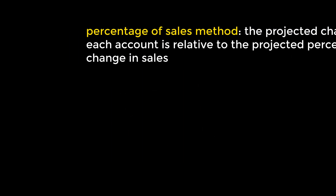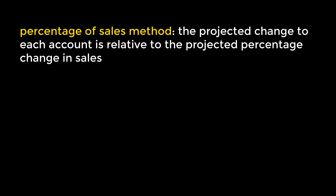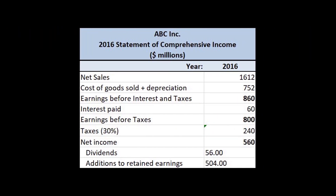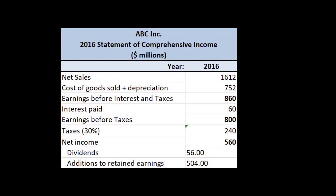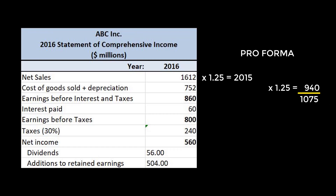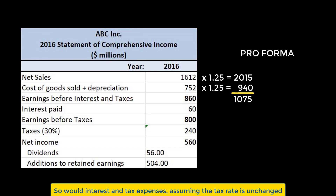The percentage of sales method dictates that accounts are projected depending on a firm's predicted sales. Beginning with our basic statement of comprehensive income, let's suppose we predict increased sales of 25% in the coming year. We would make 1,612 times 1.25 in sales. One of our underlying assumptions is that costs run in proportion to sales, meaning that they too would rise 25% from 752 to 940.